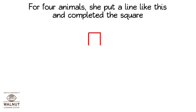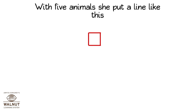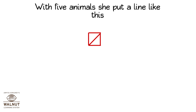For 4 animals, she put a line like this and completed the square. With 5 animals, she put a line like this. Read the table and try to find out how many students chose each animal as their favourite animal.